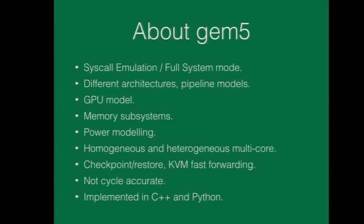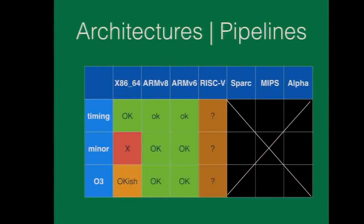GEM5 is not cycle-accurate, so if you want anything cycle-accurate and rely on this, don't use GEM5. The funny bit is it's implemented in C++ and Python, which got me a bit. As for architectures and pipeline models, there are three major different pipeline models. Two are in-order. The second one is coming from ARM and is supposed to work for some people with x86 — and you can guess what 'supposed to run' means.